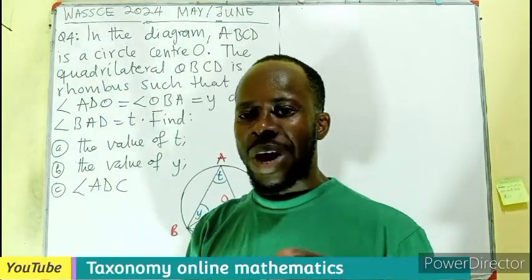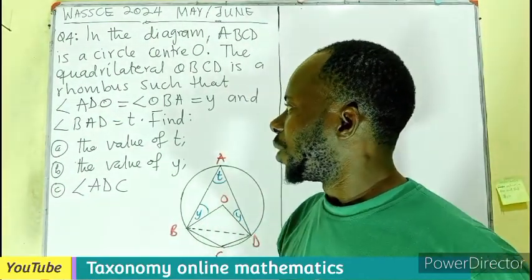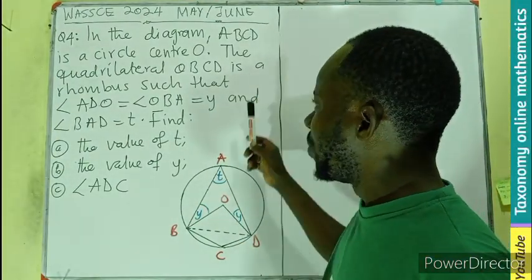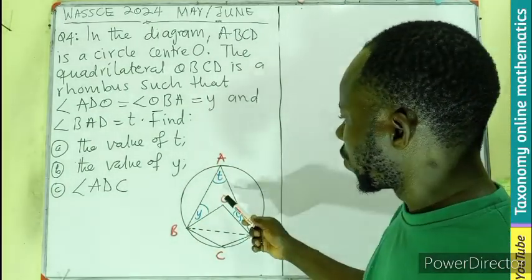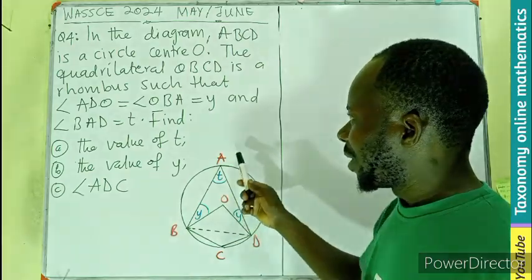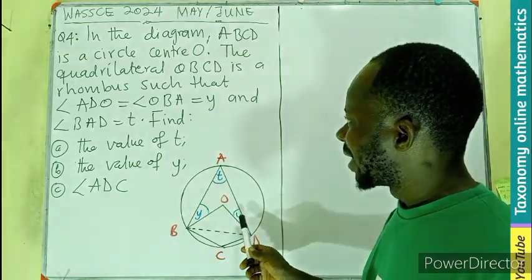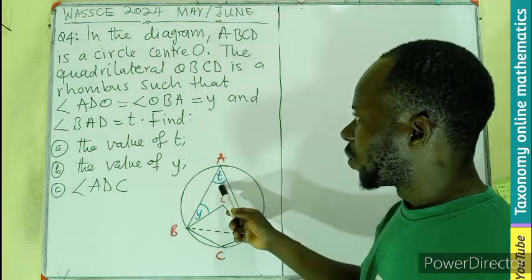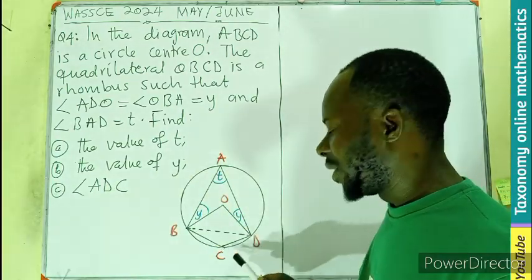Hello, welcome. This is question number four of WASSCE 2024 May/June edition. In the diagram, ABCD is a circle with center O. The quadrilateral OBCD is a rhombus, such that angle ADO equals angle OBA equals y, and angle BAD equals t. We have to find the value of t, y, and the angle ADC.